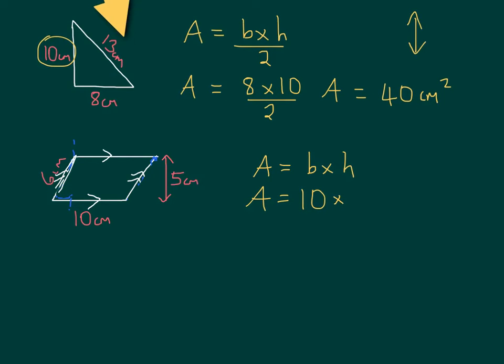So, going back to our original parallelogram, we need to work out the area. So, it's going to be area of 10 times height. Again, we've got a choice, 6 or 5. And again, we must use the vertical height. So, that's going to be 5. So, 10 times 5 is 50. So, that is 50 centimeters squared. That's correct.